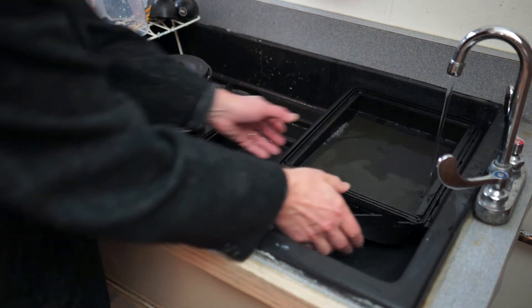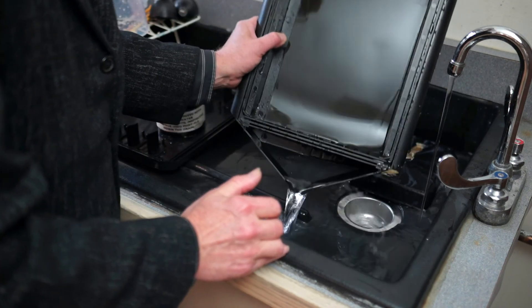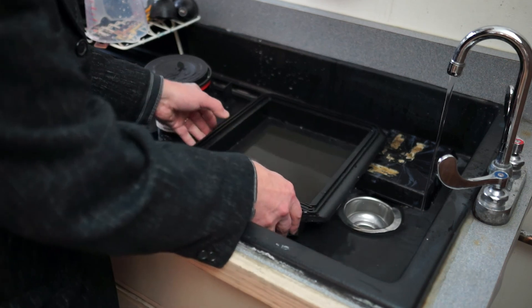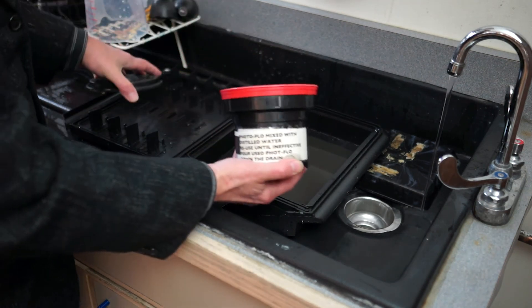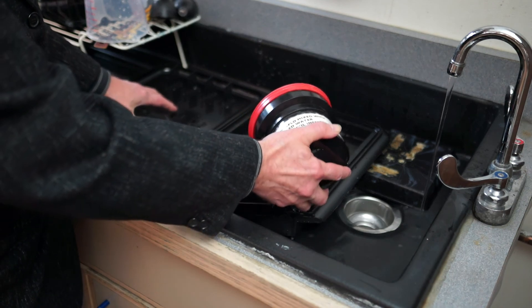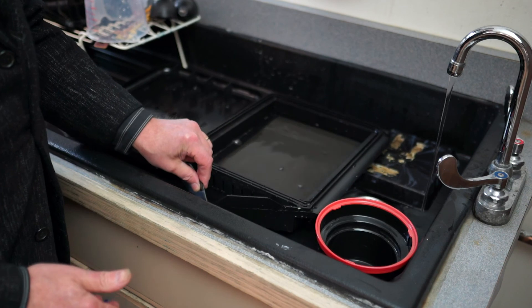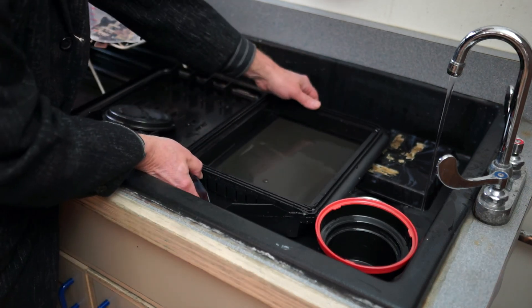After five minutes of washing, you can just dump the water out of the tray. And you can just do your photo flow right in here. Just pour it from this tank in and just slosh it around for a few seconds. Pour it back into the container.